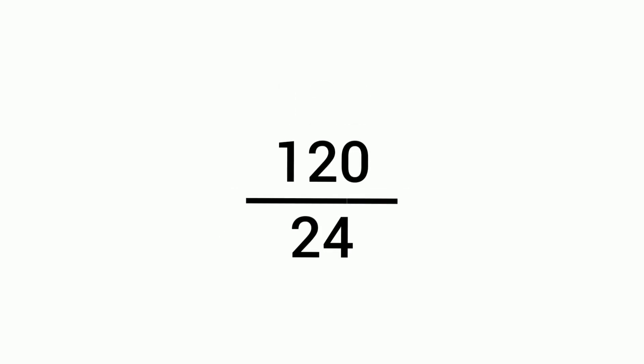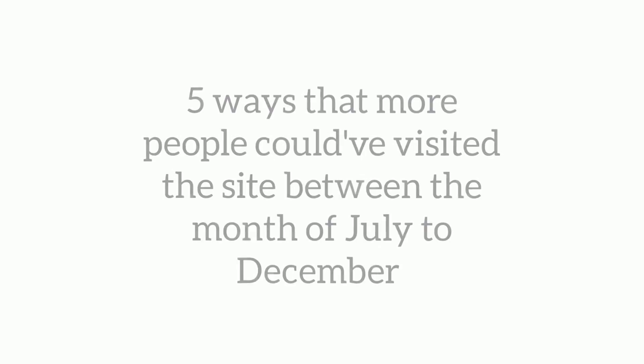Five times four times three times two times one is 120. Four times three times two times one equals 24. 120 divided by 24 equals five, or five ways that more people could have visited the site between the months of July to December. Not too hard, right?